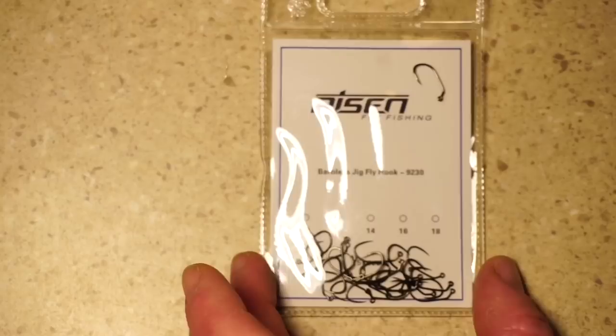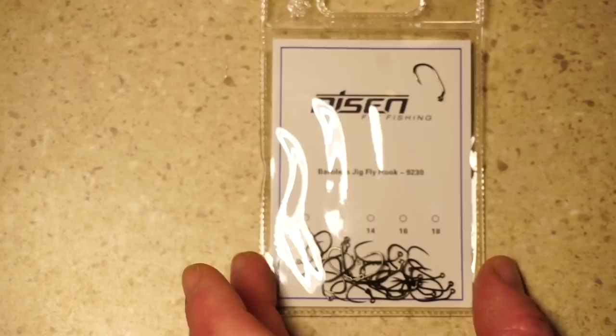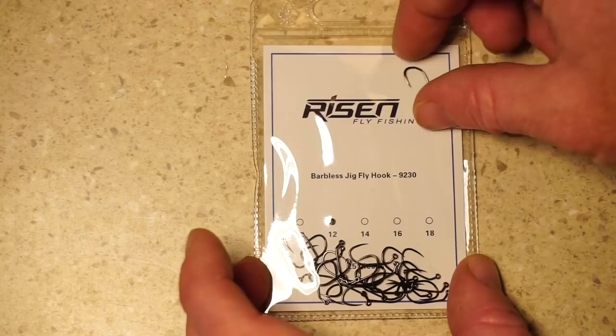I like using a jig hook, so this fly swims hook point up, and I really like these Risen barbless jig hooks, number 9230, in size 12.